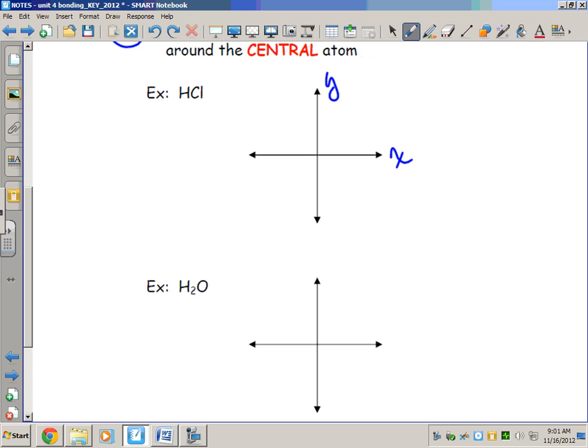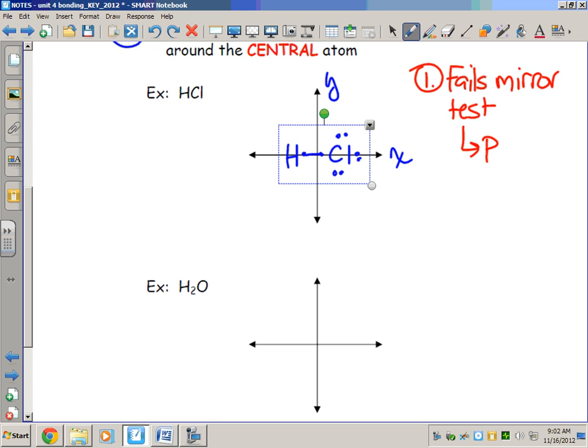Let's start with an example, something concrete. We're going to draw the Lewis structure for HCl. Here's our bond. As you can see, this doesn't pass the mirror test. I can't flip it and get the same thing. Since it fails the mirror test, that means it's a polar molecule. We can stop right there. Doesn't pass the mirror test, it's asymmetrical, it's a polar molecule.